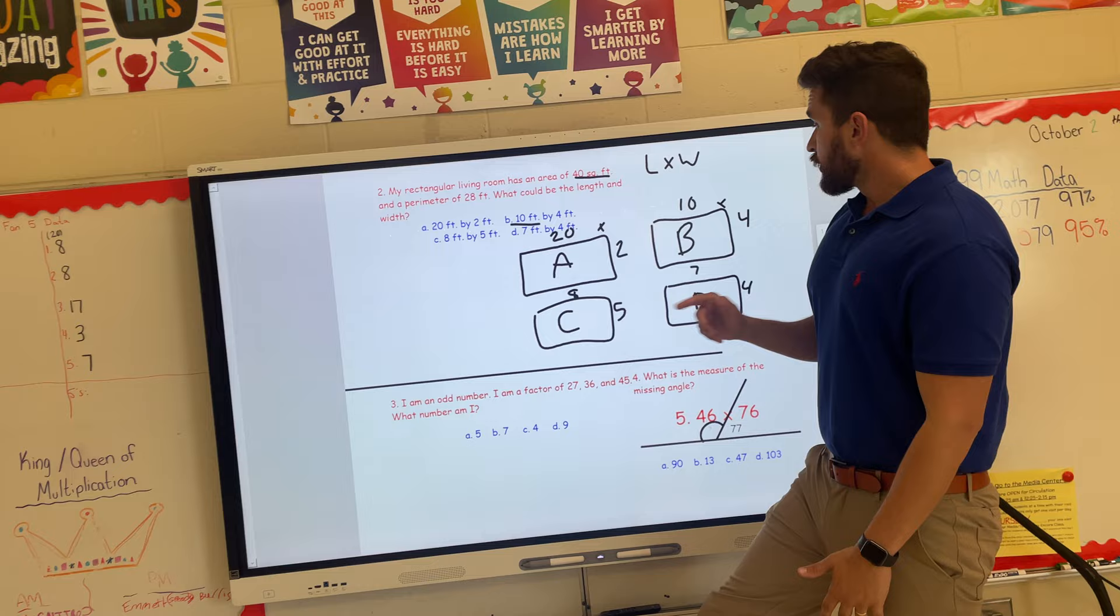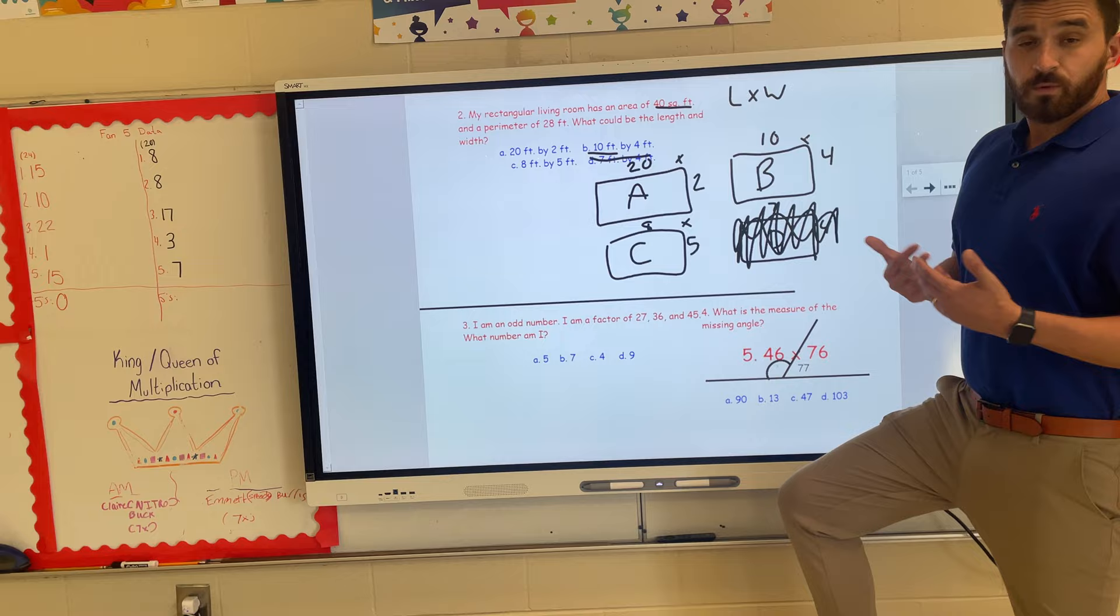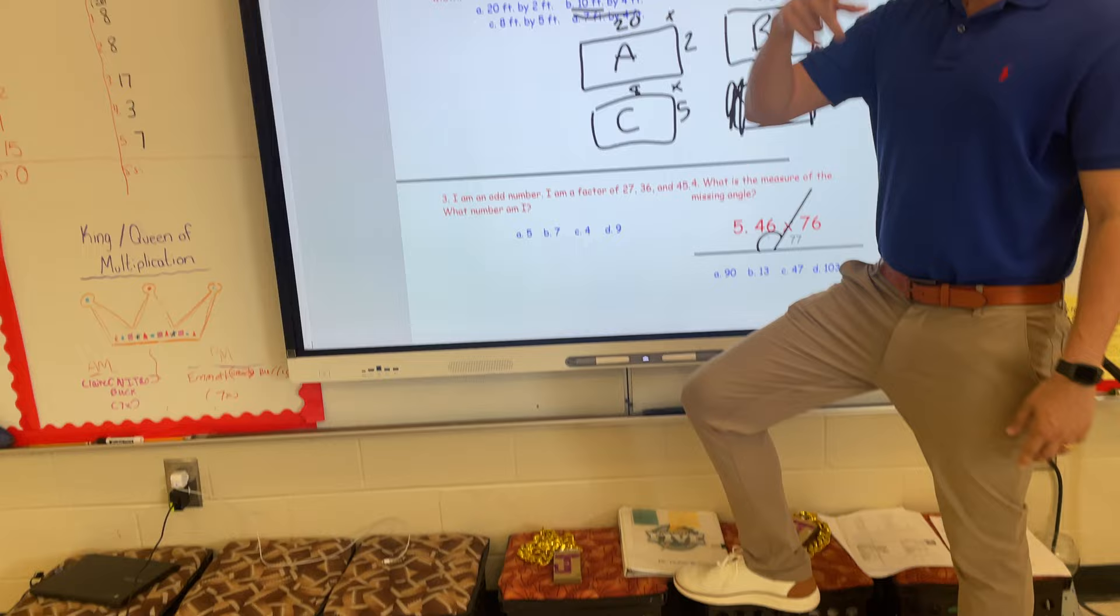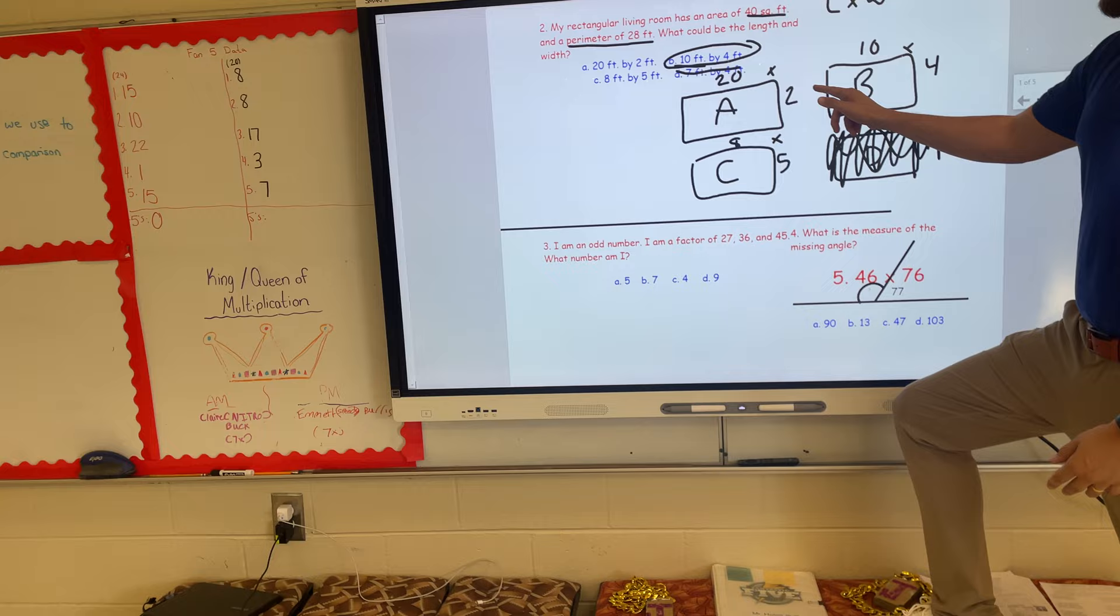10 times 4 gives me 40. 8 times 5 gives me 40. But I could get rid of D because that would give me an area of 28 square feet, so I wouldn't even need to waste any time with that one. The second part is where you're going to find out your answer, because with the perimeter of 28 feet, that means you've got to add all the way around to get 28. We looked at every single rectangle this morning and this afternoon.